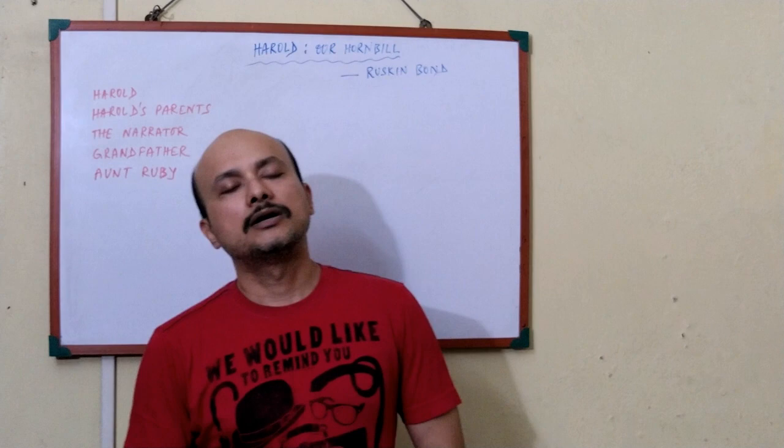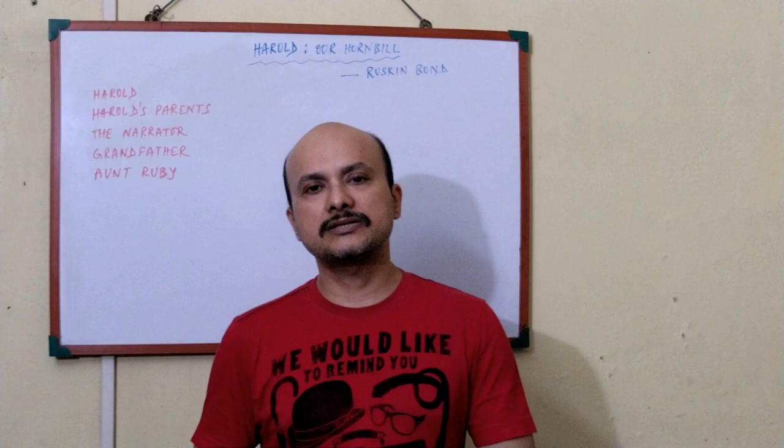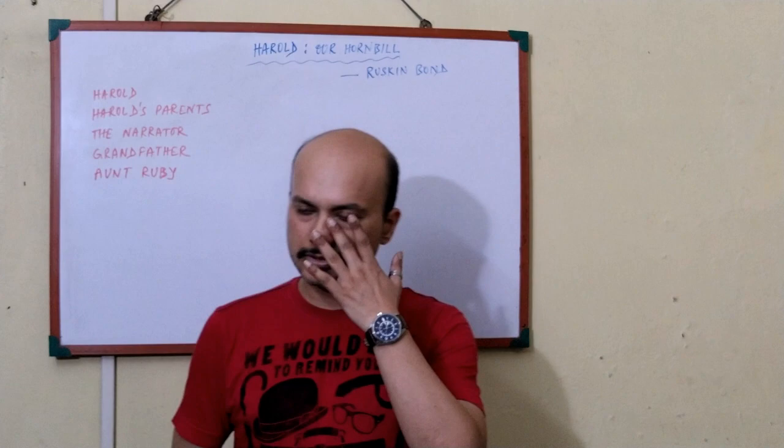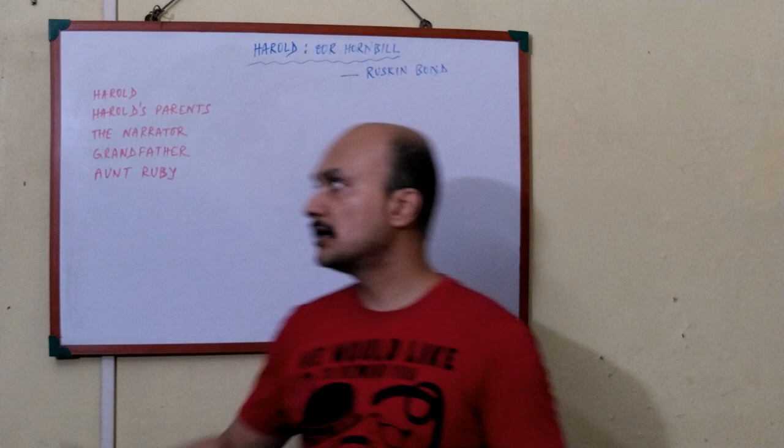Now, Ruskin Bond, as you know, was a very famous — or is a famous rather — Indo-Anglican writer. He resides in the Himalayan foothills, Mussoorie and all those places, and writes very nice, easy, lucid children's literature. And literally in all the classes you can find some story from Ruskin Bond; definitely at least one you will find.